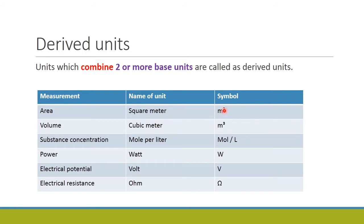Volume has the unit cubic meter, symbol m³. Substance concentration is mole per liter, symbol mol/L (capital L). Power is watt, symbol W. Electric potential is volt, symbol V. Electric resistance is ohm, represented by the ohm symbol (Ω).